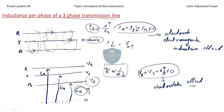So we have two effects: the electromagnetic induction effect, which is due to current imbalance caused by current flowing through the phases, and the electrostatic effect, which is due to voltage imbalance caused by the potential difference or electric field.